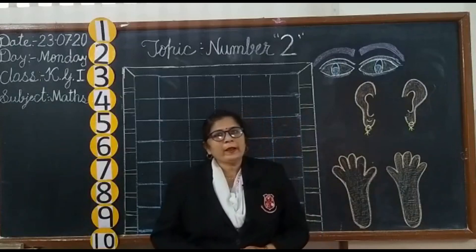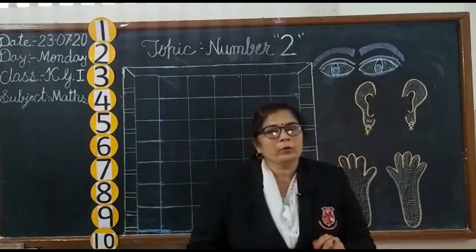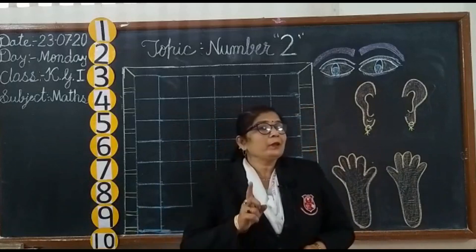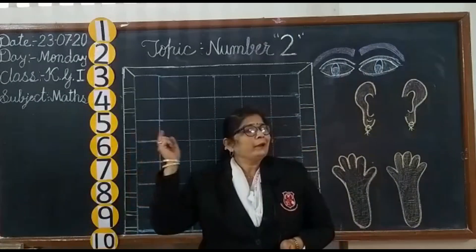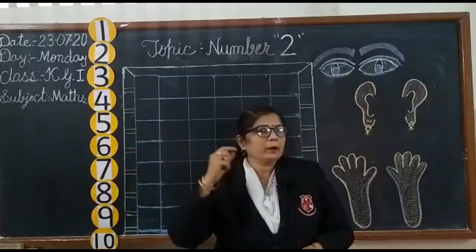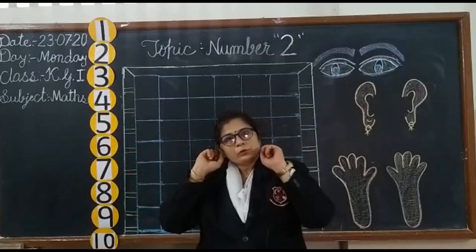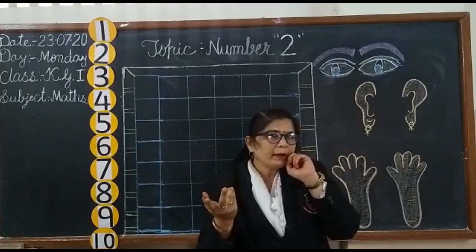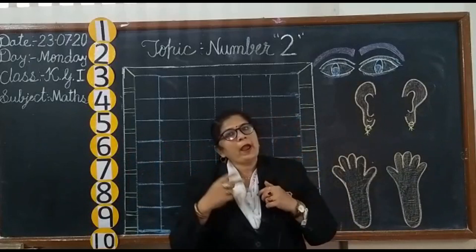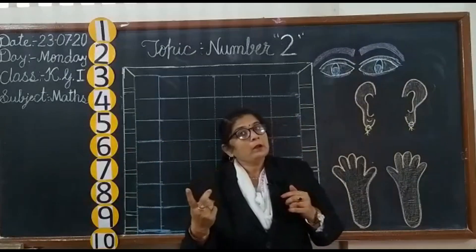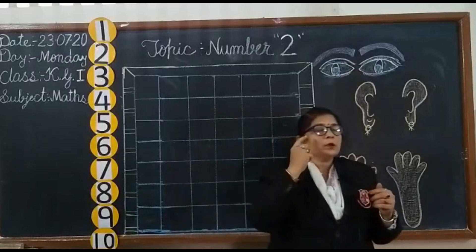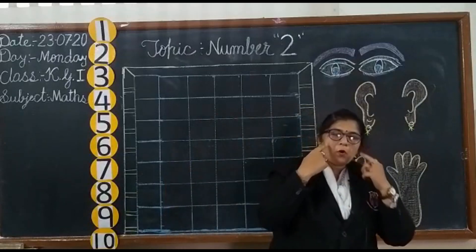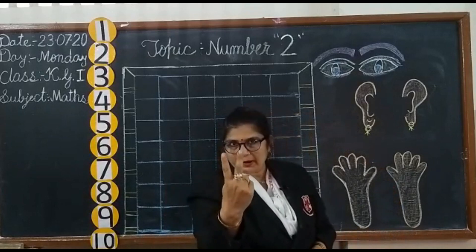The first method is touch and count. If you want to count your ears, you will touch and say the number: 1, 2. So how many ears do you have? Yes, we have 2 ears. Now count the eyes. 1, 2. So we have 2 eyes.